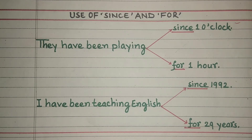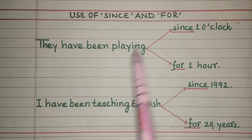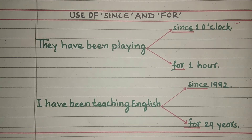Agar aap yeh kehna chahte hain: 'Woh ek baje se khel rahe hain' — they have been playing since 1 o'clock — woh ek baje se, do baje se, teen baje se, chaar baje se, paanch baje se, chhe baje se, saat baje se, aath baje se khel rahe hain.